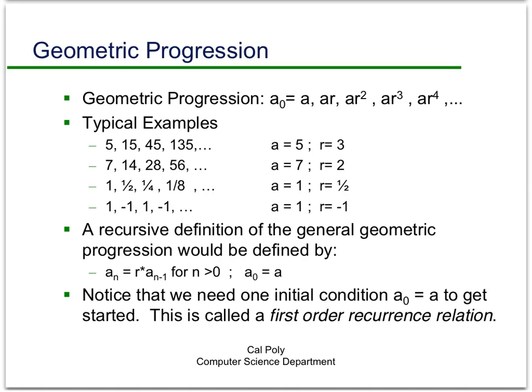The general geometric progression would be defined as a_n equals r times a_(n-1) for all n greater than 0, and we need a starting point, a_0 equals a. Again, we need one initial condition because we're going back one step in the sequence in our definition. When we have this situation, we call this a first-order recurrence relation. This is an important concept to remember, and we'll come back to it again and again in the course.